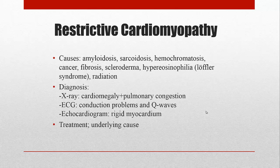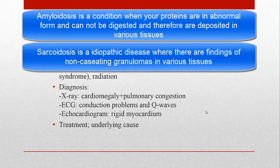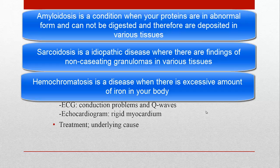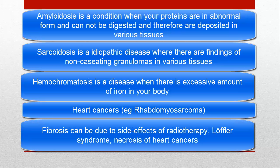Causes of restrictive cardiomyopathy include amyloid — formation of abnormal proteins that cannot be digested in the extracellular space; idiopathic diseases causing non-caseating granulomas such as sarcoidosis; iron overload in hemochromatosis; cancer of the heart; fibrosis due to radiation therapy (for instance, if treating a lung tumor, the radiation can damage the heart); autoimmune causes such as fibroblast over-activation seen in systemic scleroderma; and hypereosinophilic syndrome, where an increased number of eosinophils damage tissues — in a subtype called Löffler syndrome, the endocardium is damaged.